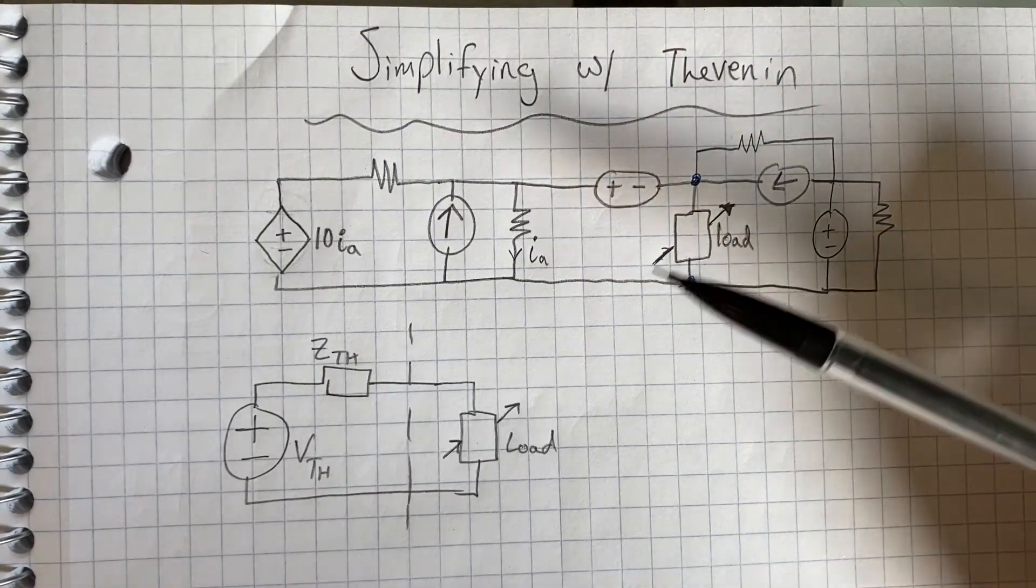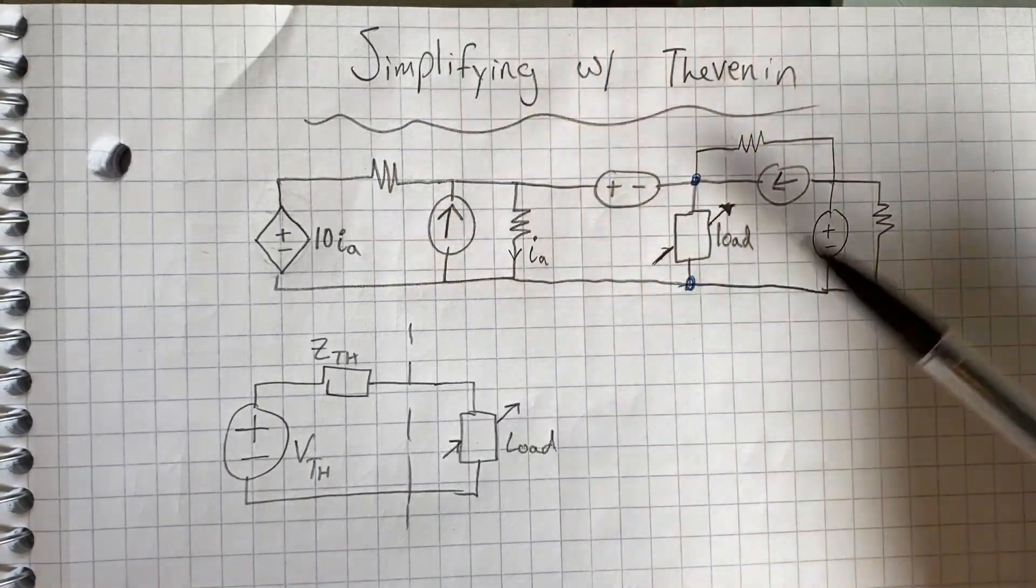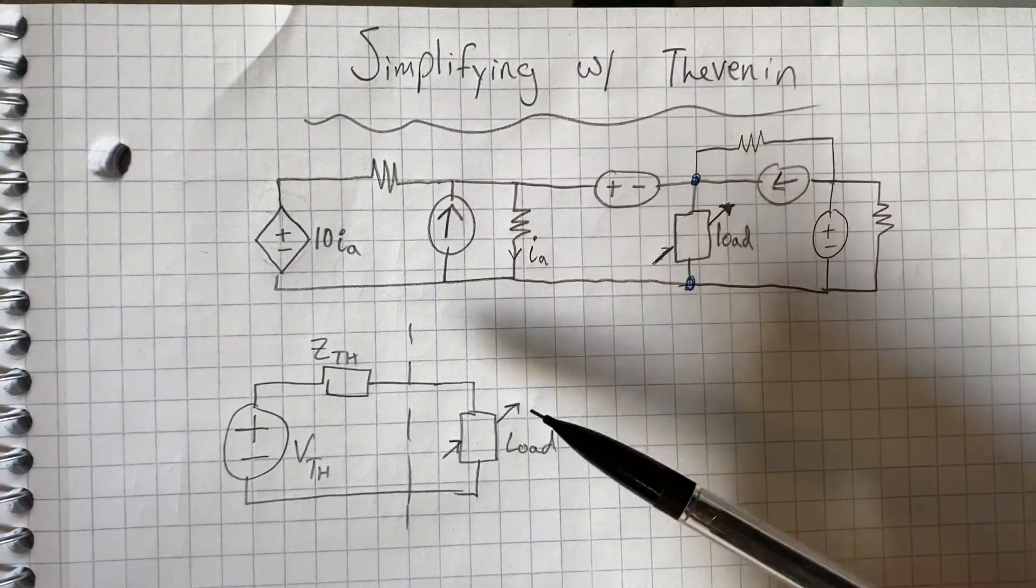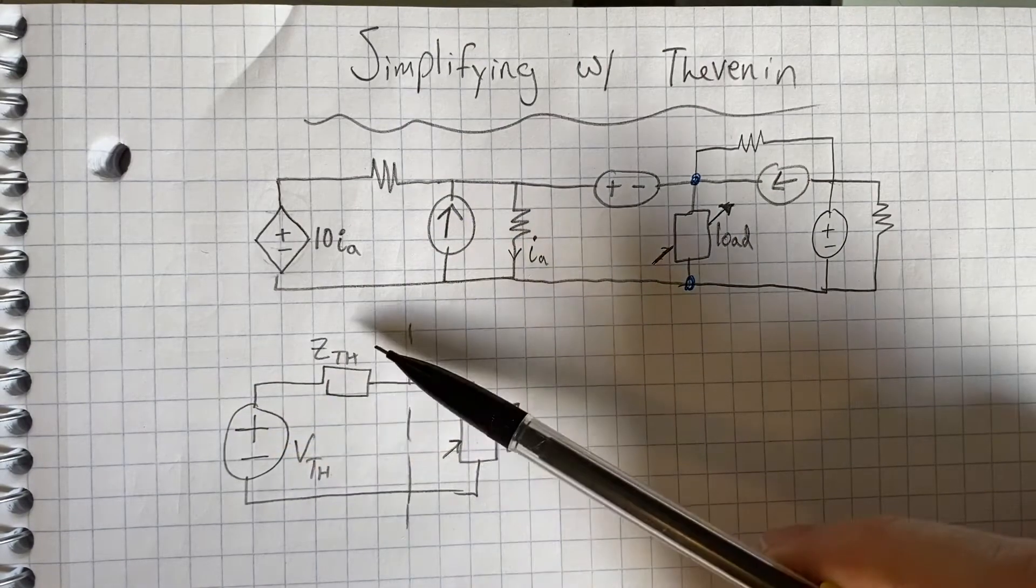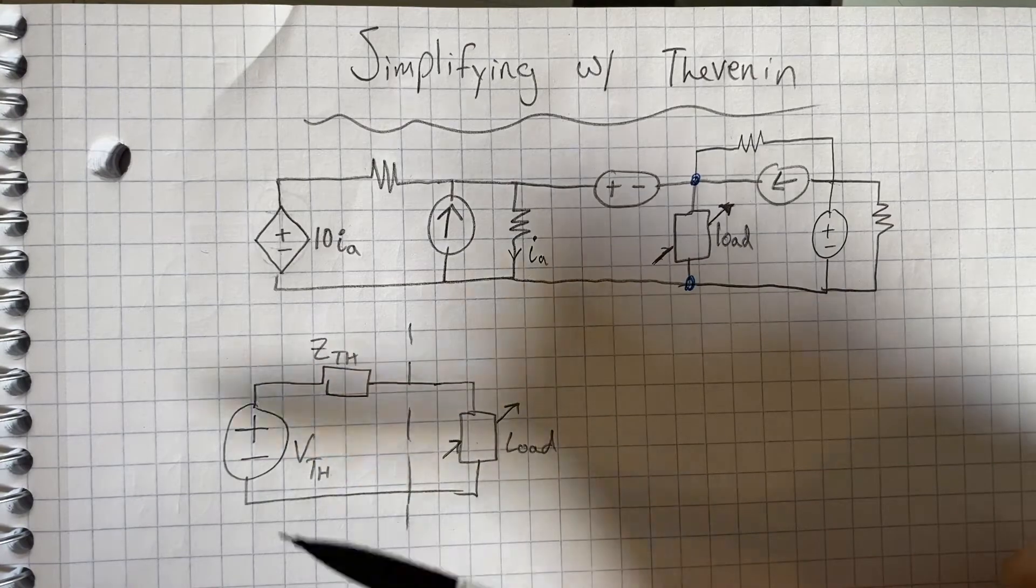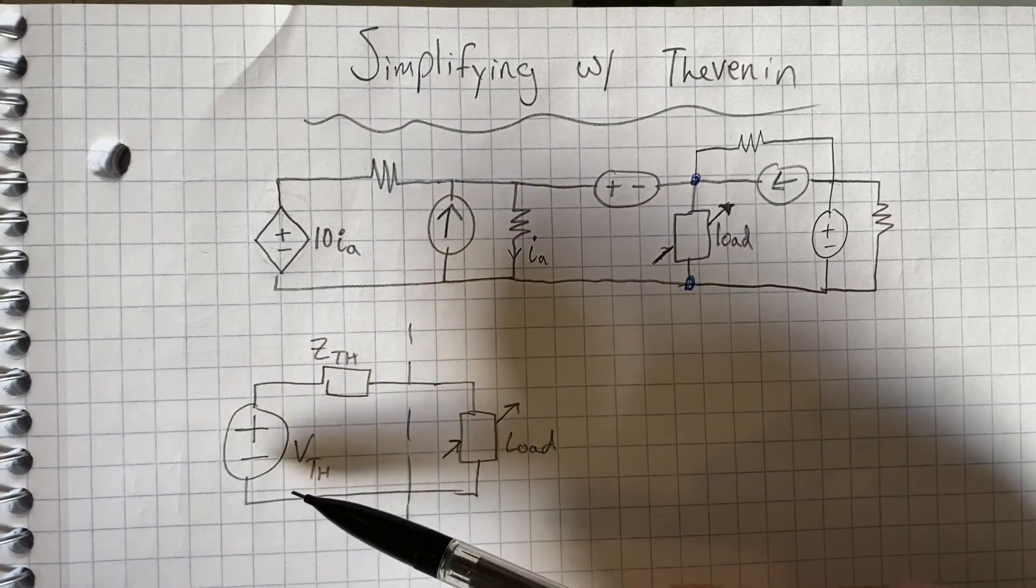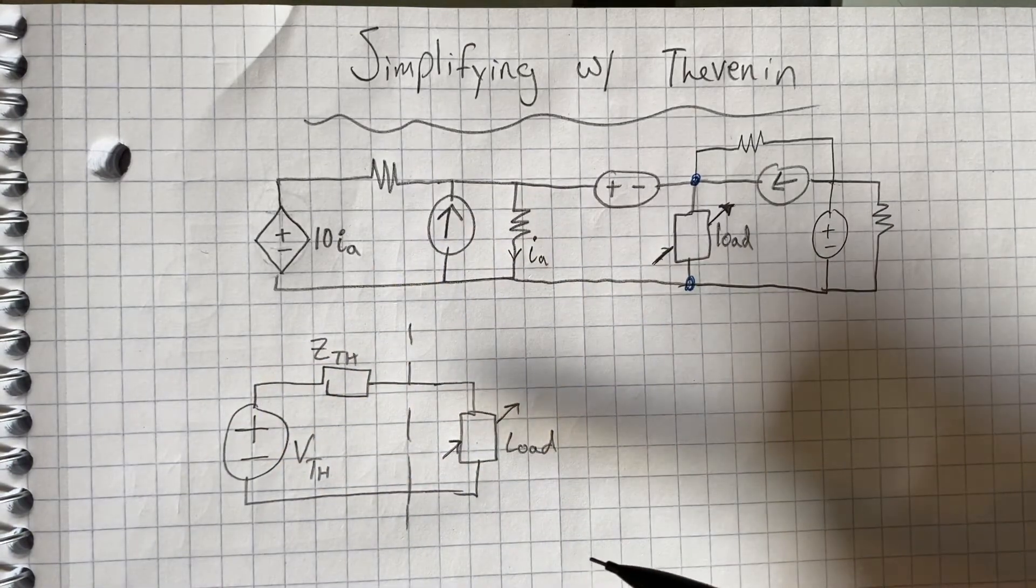So the idea behind Thevenin is we can treat any linear circuit with an equivalent Thevenin voltage and Thevenin impedance. And if you wanted a current source instead, you can do a source transformation. I have another video on that.